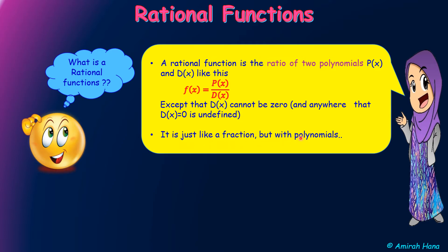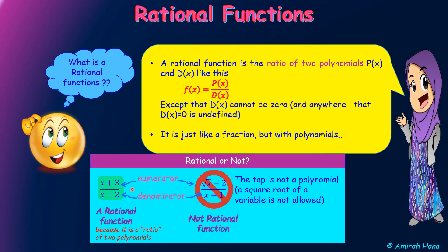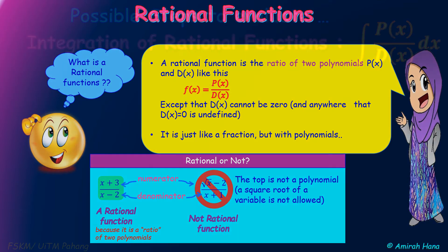D(x) cannot be 0, and anywhere that D(x) equals 0 is undefined. It is just like a fraction but with polynomials. Now let me check whether these are rational or not. We have the fraction (x+3) over (x−2), and the fraction square root of (x−2) over (x+1). The top function is called the numerator and the bottom is called the denominator. The expression (x+3) over (x−2) is a rational function because it is a ratio of 2 polynomials. But the second is not a rational function because the numerator is not a polynomial — a square root of a variable is not allowed.